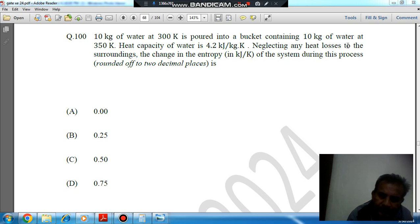Neglecting any heat losses to the surrounding, the change in entropy in kilojoules per Kelvin of the system during this process, rounded off to 2 decimal places is: option A 0.00, option B 0.25, option C 0.50, and option D 0.75.